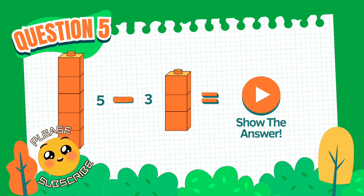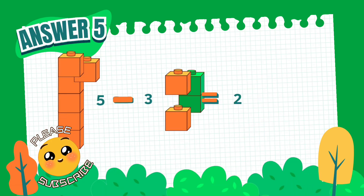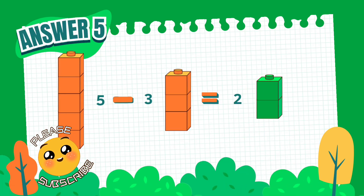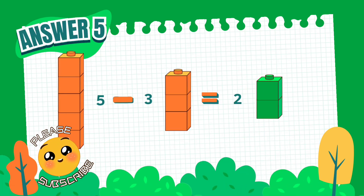What's your answer? The answer is 2 — 2 blocks. 5 minus 3 equals 2.